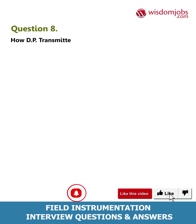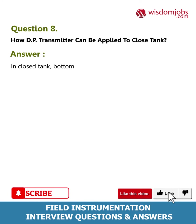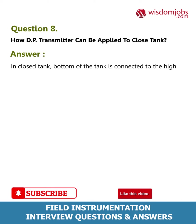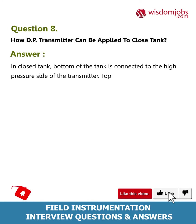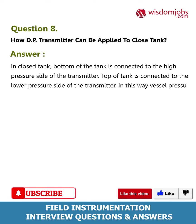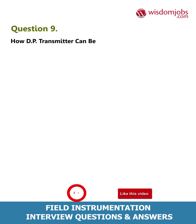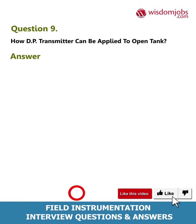Question 8: How can a DP transmitter be applied to a closed tank? Answer: In a closed tank, the bottom of the tank is connected to the high pressure side of the transmitter, and the top of the tank is connected to the lower pressure side of the transmitter. In this way, vessel pressure can be measured.